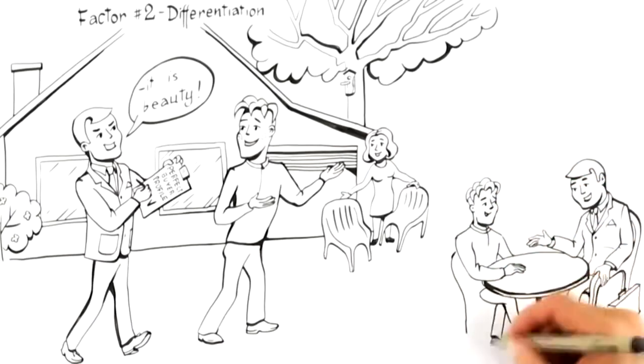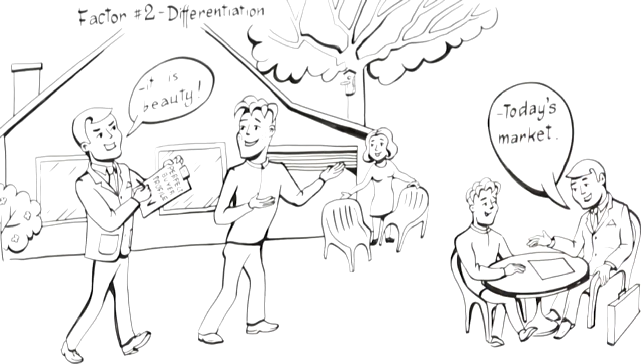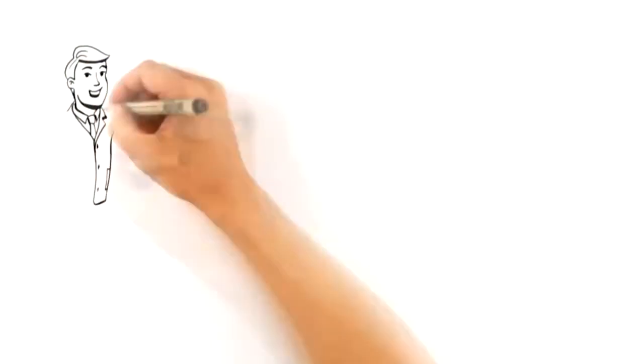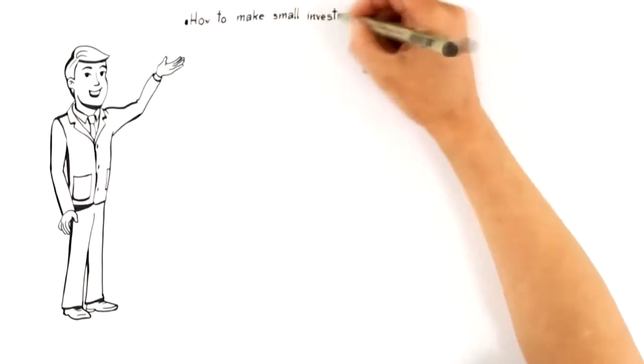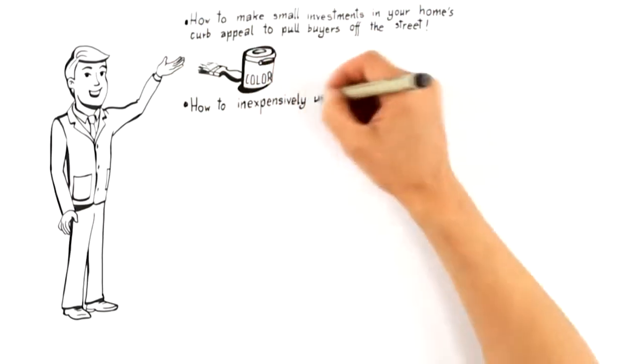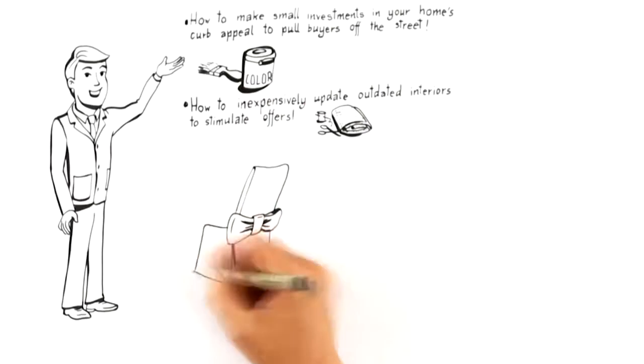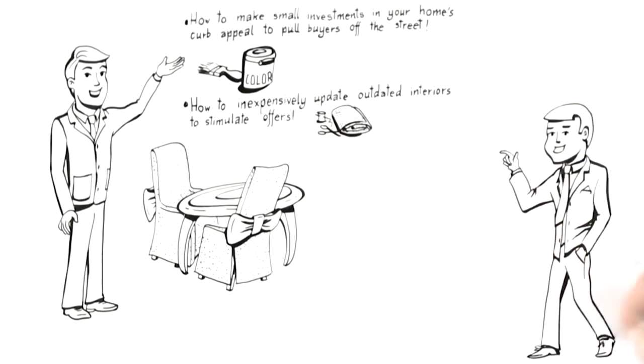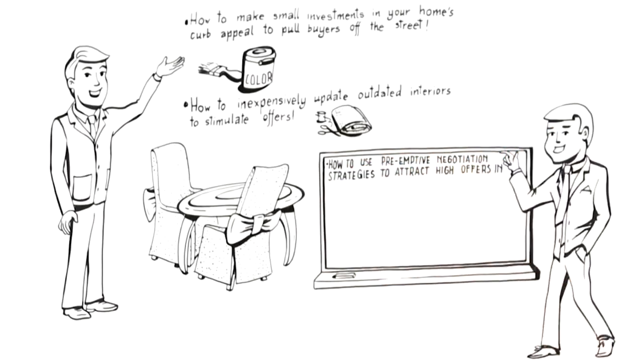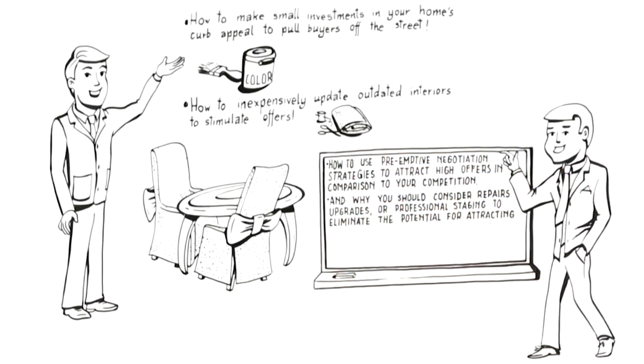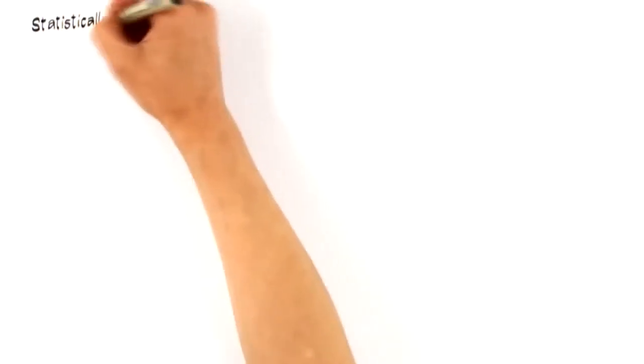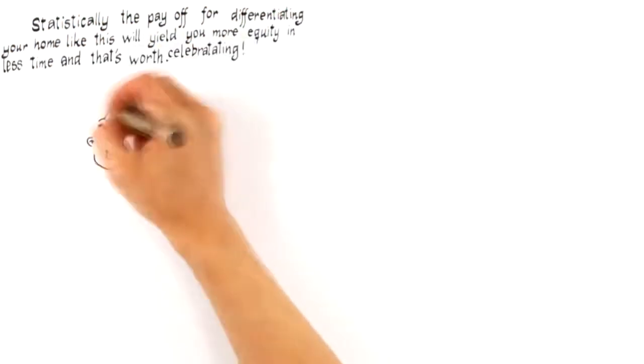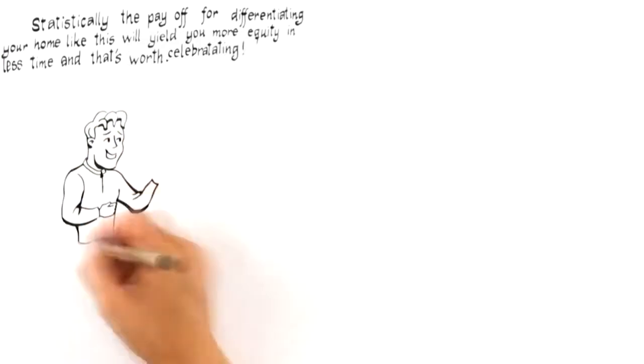Expert advisors attract these perfect buyers by differentiating your home from other homes on the market by first anticipating a buyer's wants and needs. As you'll notice, the key focus here is not on past market sales, but what is likely to attract a top-paying buyer in today's market. This means the advice you should receive to attract buyers like this must include how to make small investments in your home's curb appeal to pull buyers off the street, how to inexpensively update outdated interiors to stimulate offers, how to use pre-emptive negotiation strategies to attract high offers in comparison to your competition, and why you should consider repairs, upgrades, or professional staging to eliminate the potential for attracting low offers. Statistically, the payoff for differentiating your home like this will yield you more equity in less time, and that's worth celebrating.